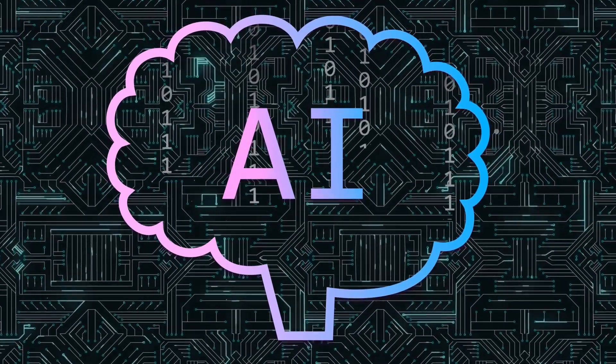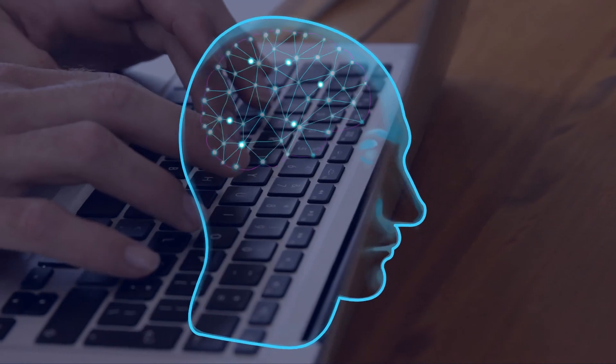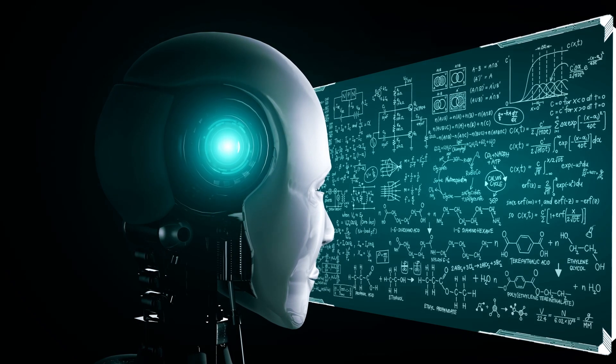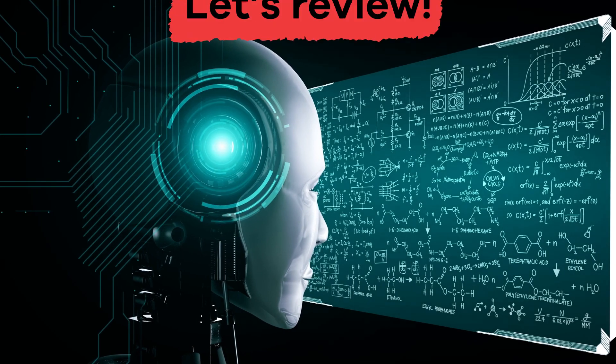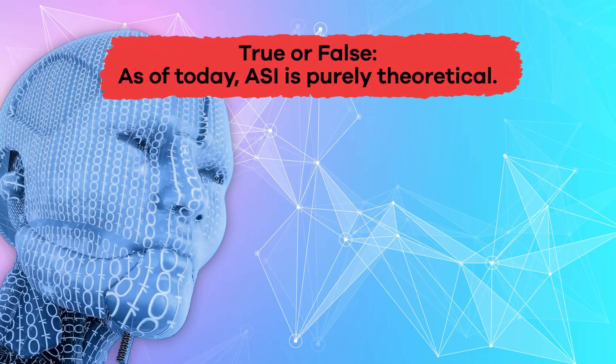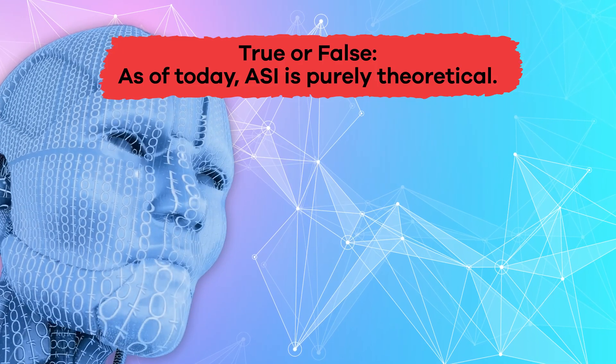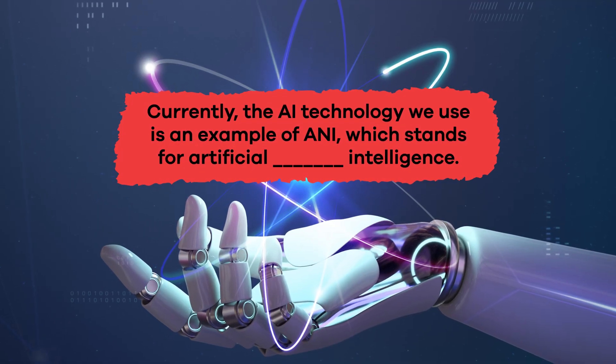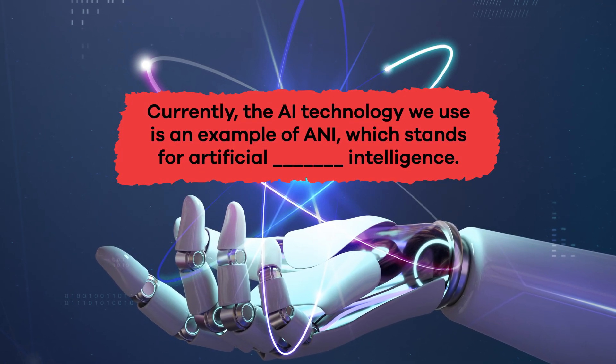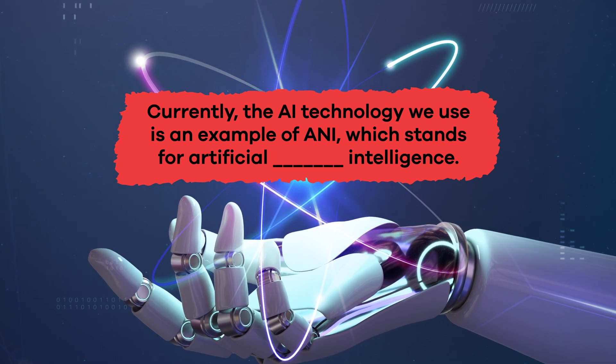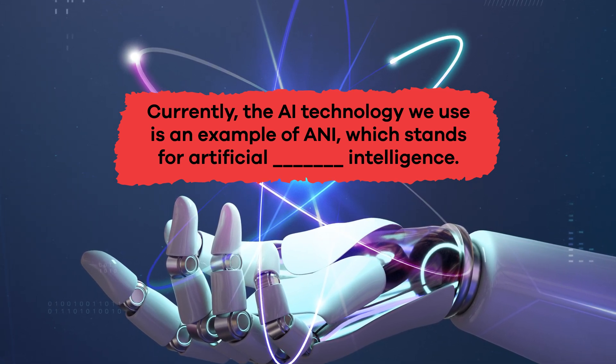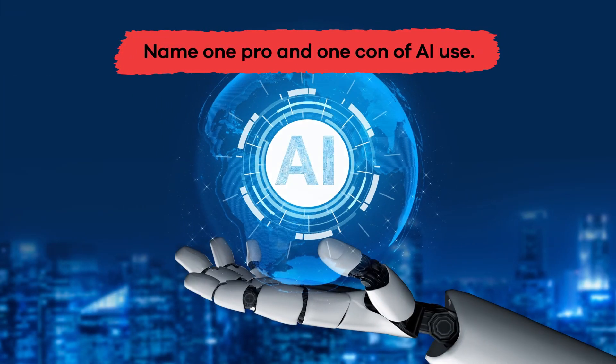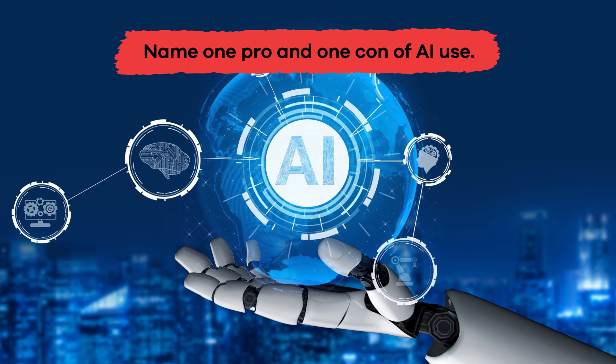Sounds like there's a lot to think about when you are deciding whether the positives of AI outweigh the negatives or vice versa. We have just learned a lot about AI. Here are some questions to review: True or false, as of today, ASI is purely theoretical. True. Fill in the blank: Currently, the AI technology we use is an example of ANI, which stands for artificial narrow intelligence. Name one pro and one con of AI use.